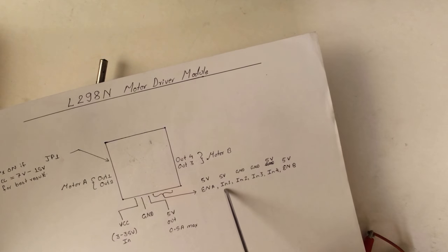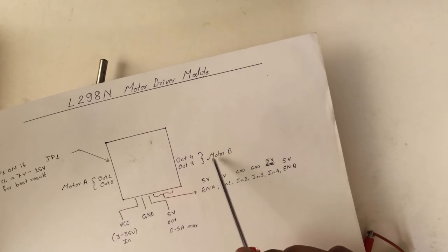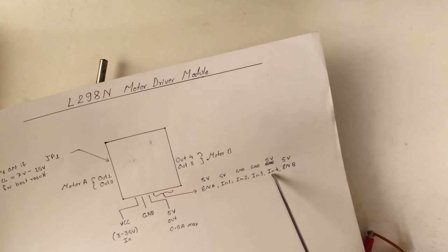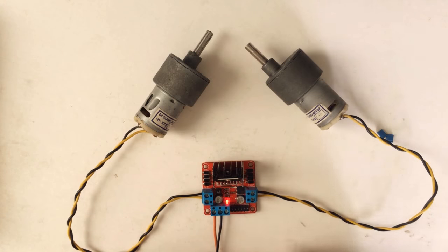To rotate Motor A we need to provide 5 volt in input 1 or input 2, and for Motor B either input 3 or input 4. Let's test it out. Okay guys, let's start testing this motor.